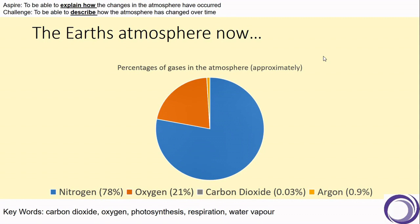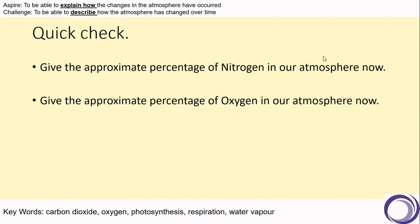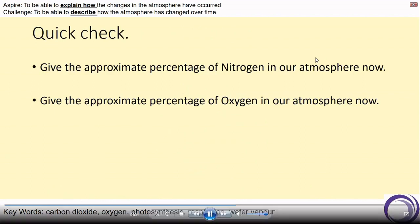Some of these percentages are so small that they barely are noticeable on the pie chart. So let's have a quick check — can you remember the approximate percentage of nitrogen and the approximate percentage of oxygen?